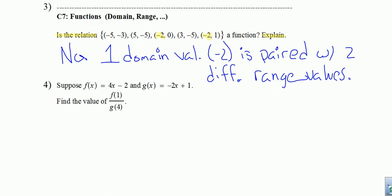While we're here, let's go ahead and do number four. Number four gives me a function f of x and a function g of x. And asks me to find f of one divided by g of four. To find f of one, I just need to find the f function and plug in one. To find g of four, I just need to find the g function and plug in four. And they're both provided for me here.